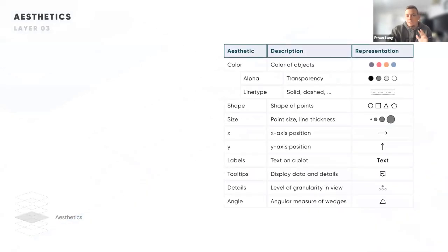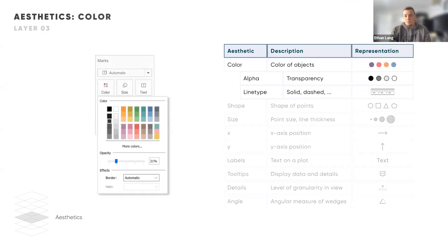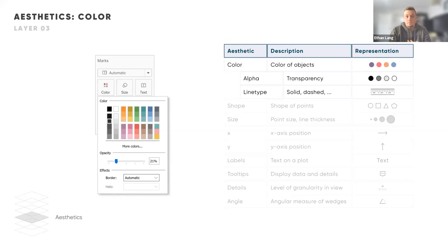The first aesthetic, and from my opinion the most powerful, is color. Color is an extremely powerful way to drive the attention of your audience to specific things on your dashboard. You can click on the color marks card and add your own branding by clicking 'more colors' and typing in custom hex codes. You can change the transparency or opacity of these colors and also add borders. This is an extremely easy way to draw the user's attention to the story you're trying to convey.